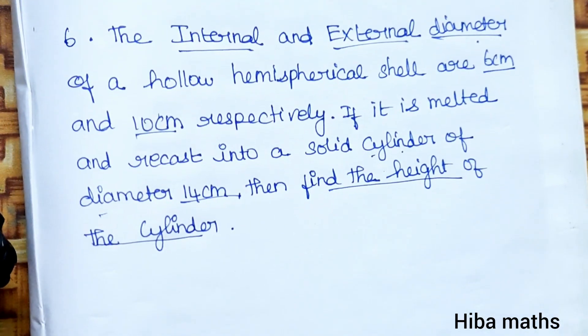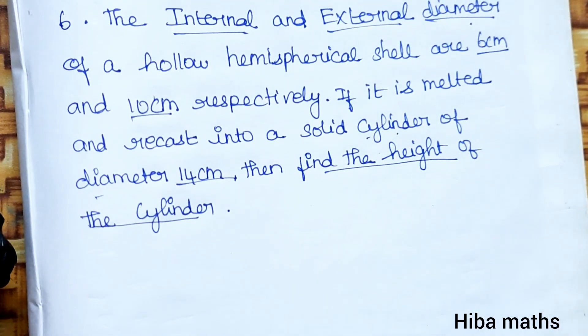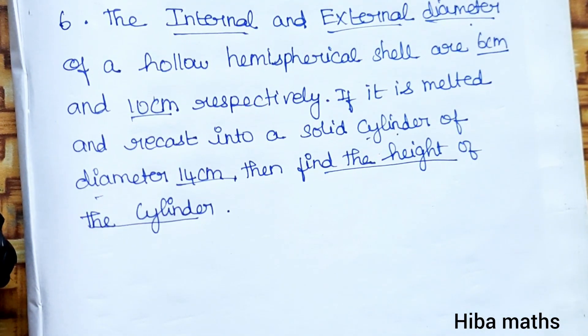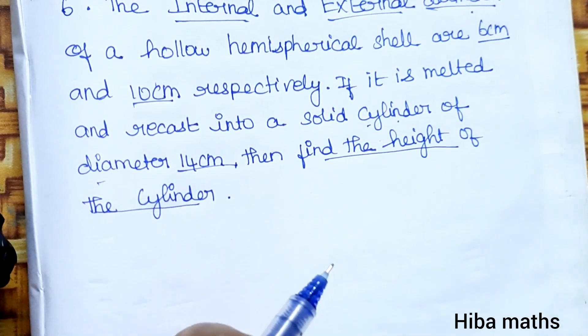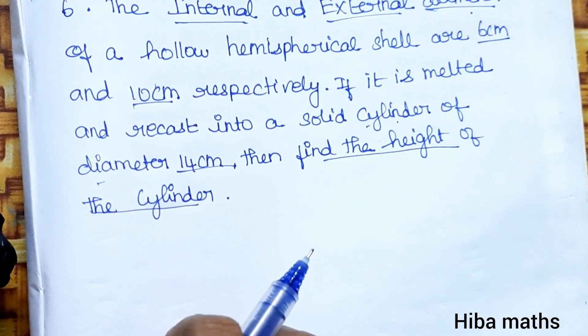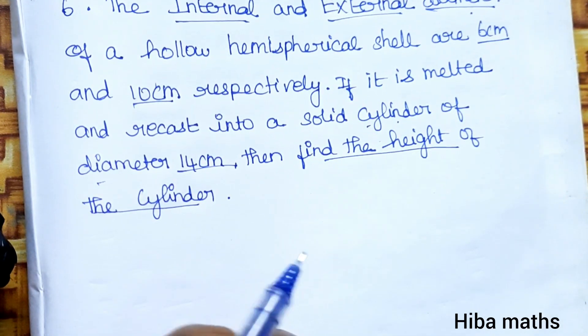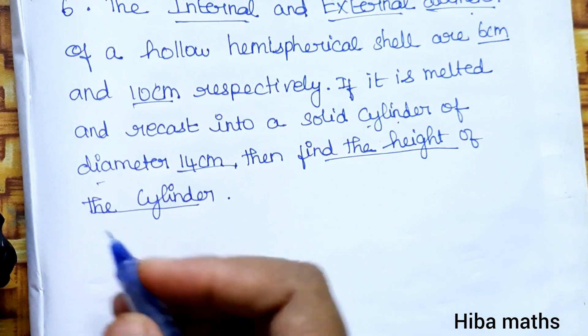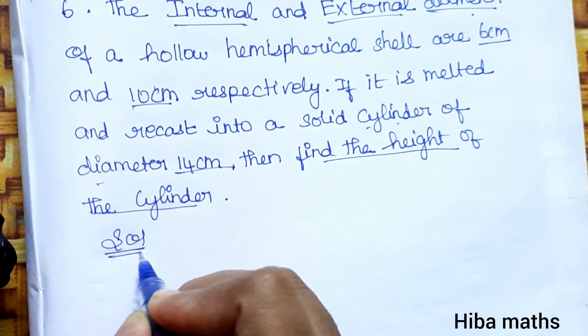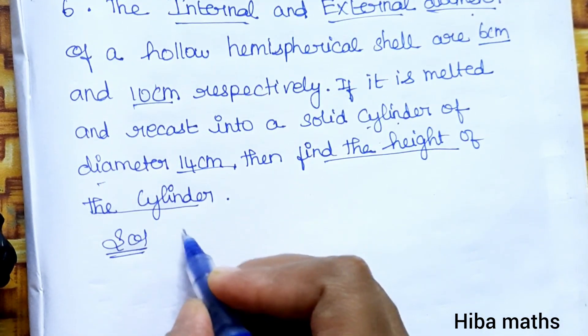When melted and recast, the volume of the hemispherical shell is equal to the volume of the cylinder. So first, we have to find the height of the cylinder.